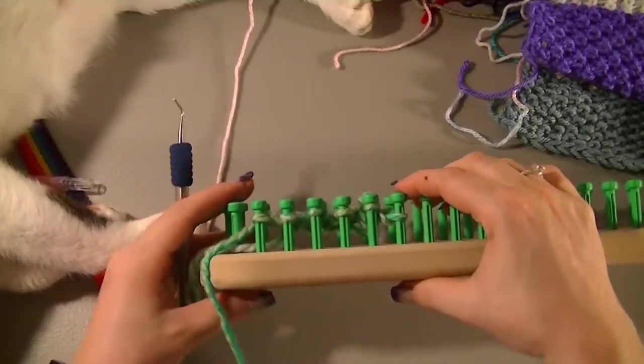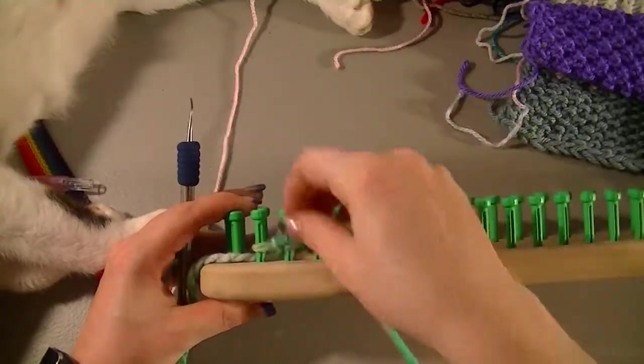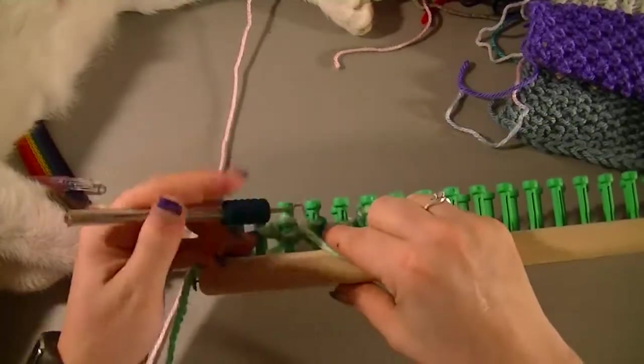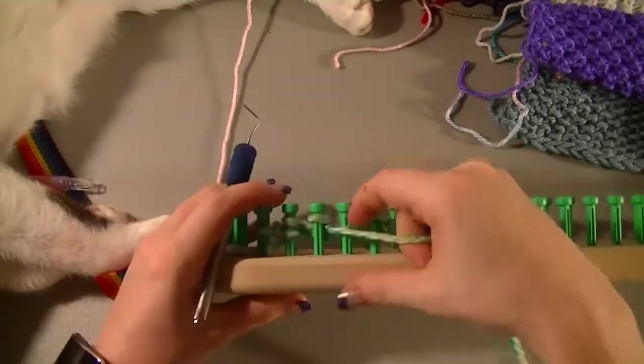So for row three and four, we're doing the opposite. So what was purled the time before is now going to be e-wrap, and what was e-wrap is now going to be purled.